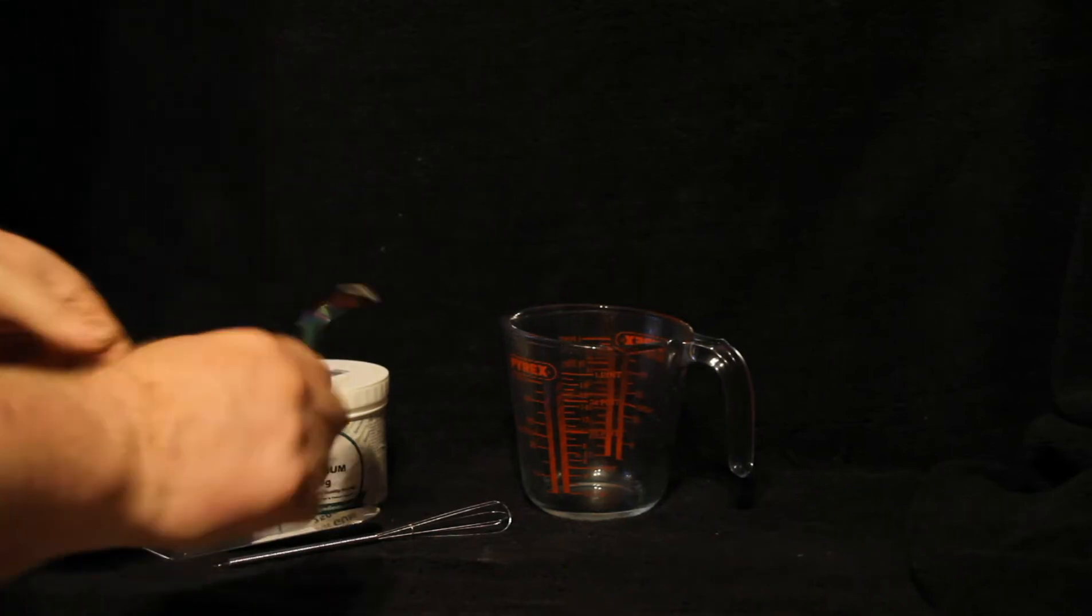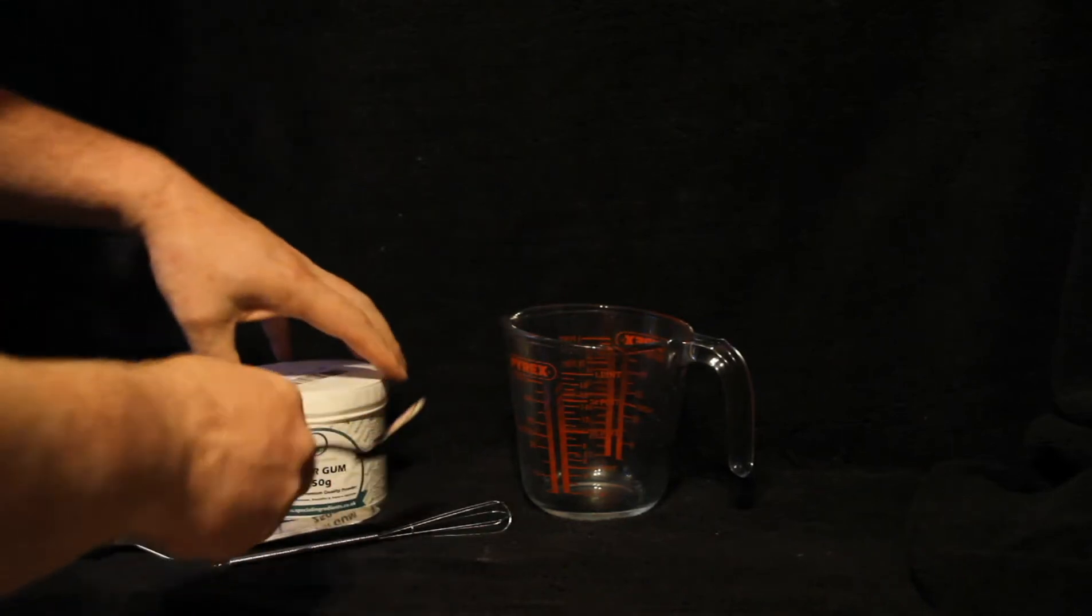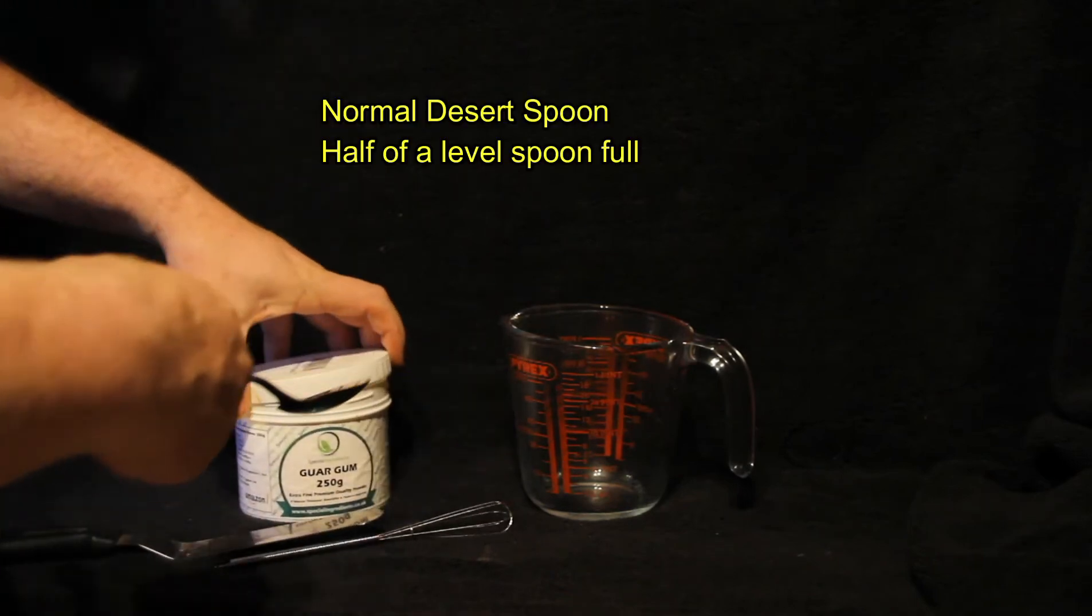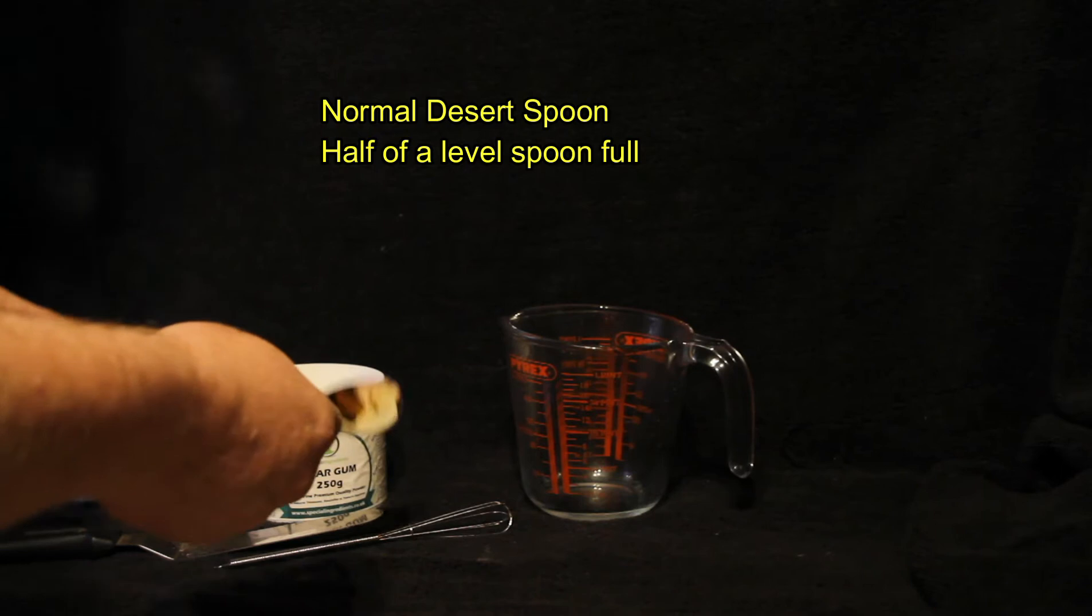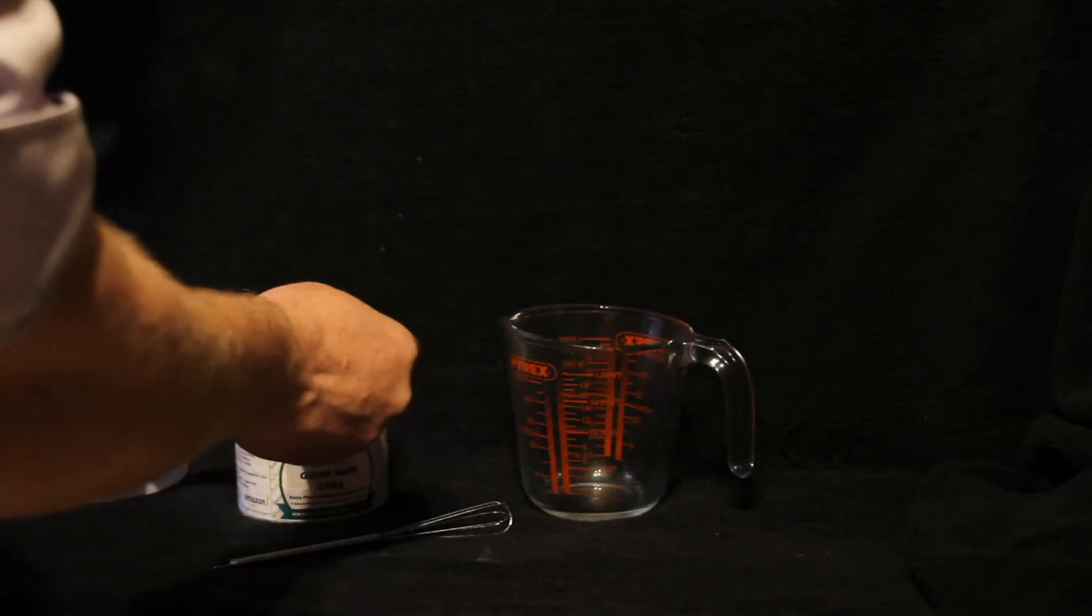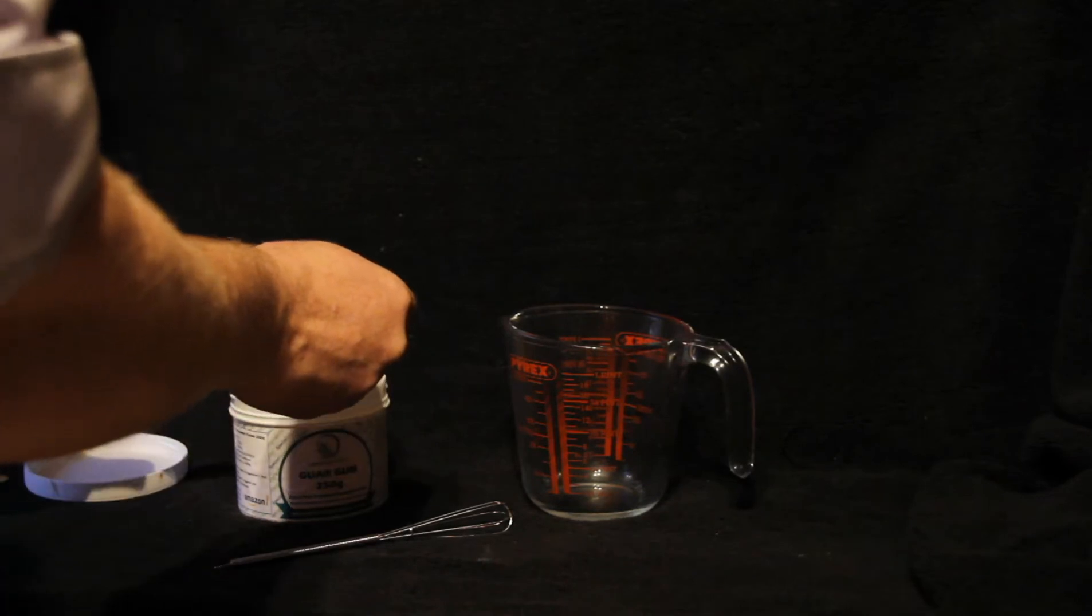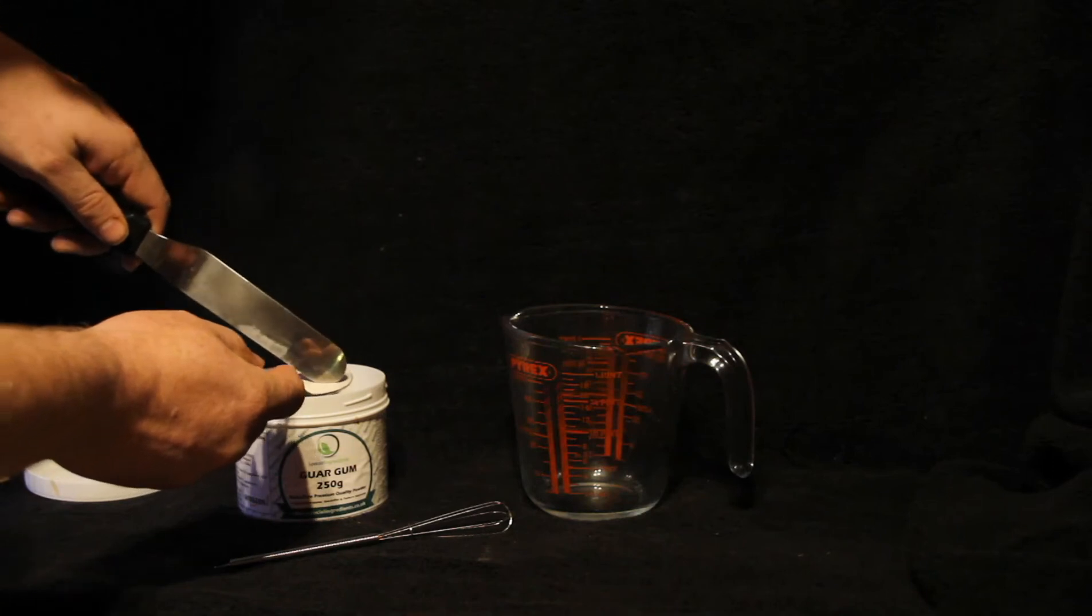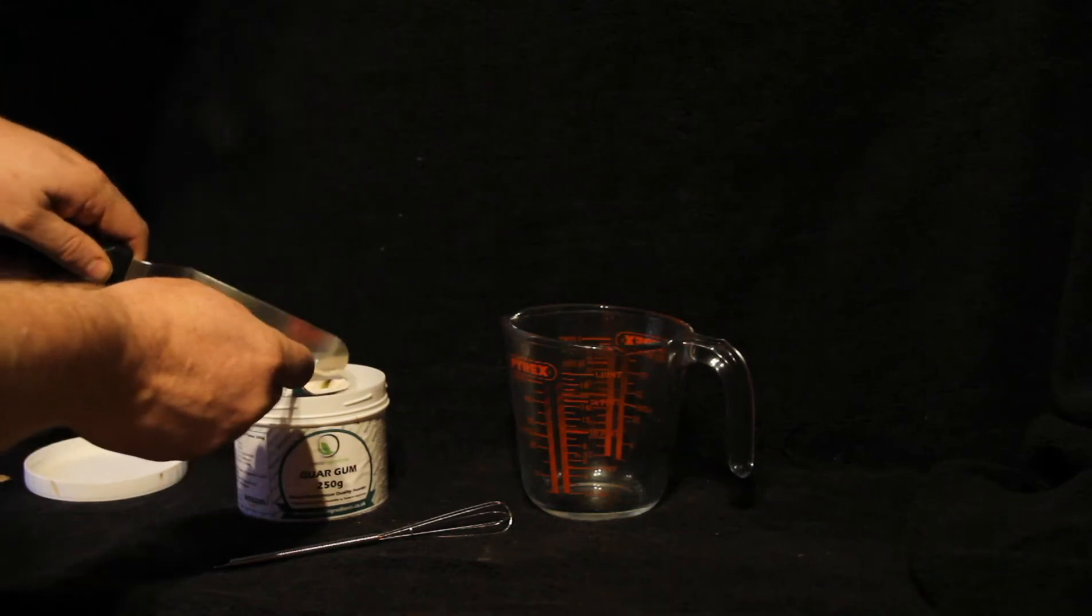Now, I've got a plain dessert spoon. All I want is half a level spoon, so I'm going to level this off first. And I want half of that, about that much.